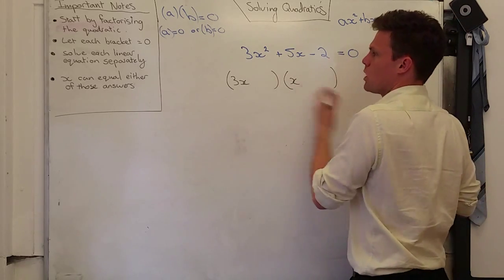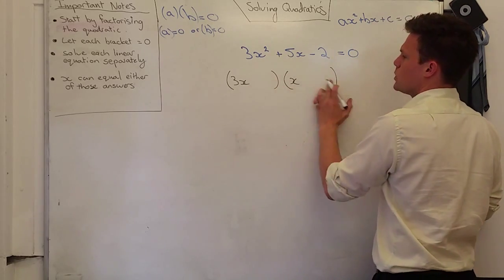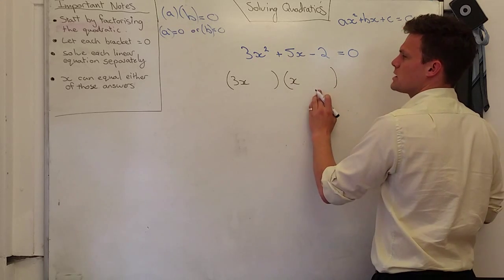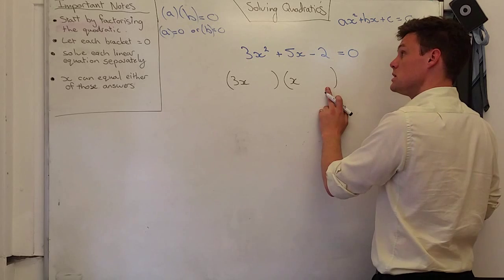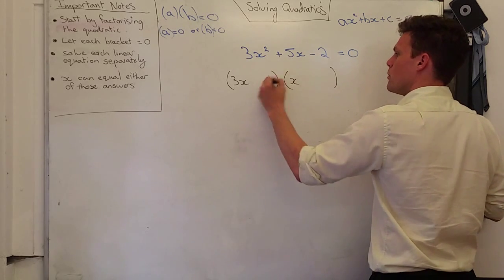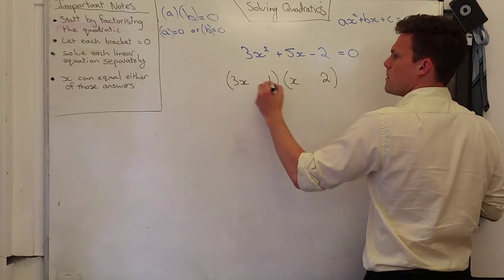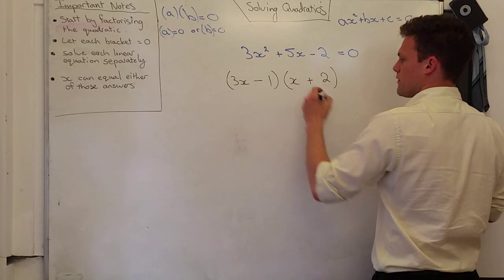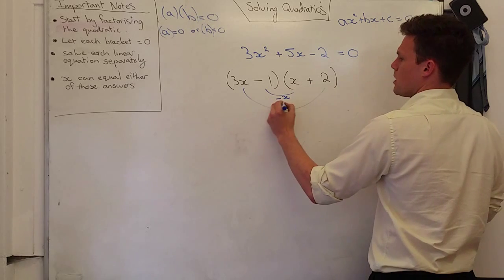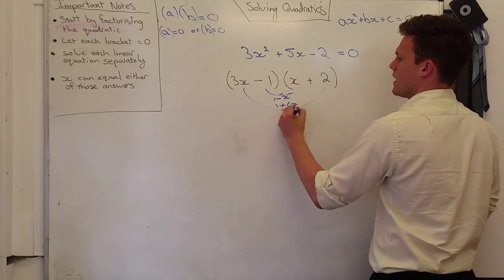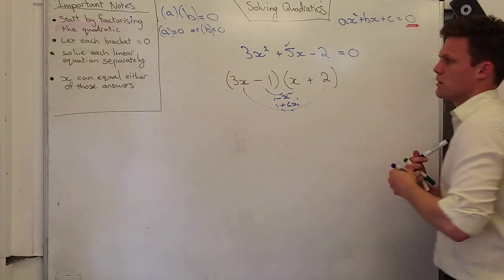Only two factors of 2 is 1 and 2, so which sign goes where? Because I want to get 5x out. So if I multiply 3 by 2, that's going to give me 6. 6 take away 1, brilliant. So that's going to go there. And that's going to have to be a minus, that's going to have to be a plus. I'll just confirm that. Get minus x here, plus 6x. Combine that and end up with plus 5. Okay?